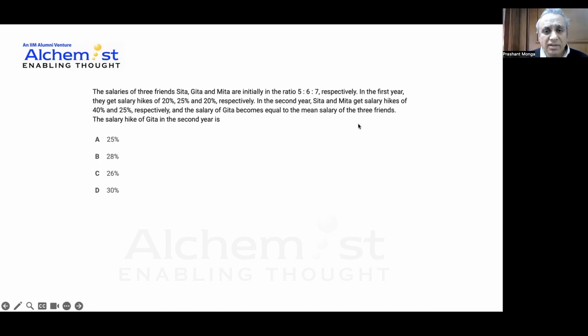In this question, three friends are given with initial salaries of 500, 600, and 700. After one year, with a 20% increase, this becomes 600, this becomes 750, and...